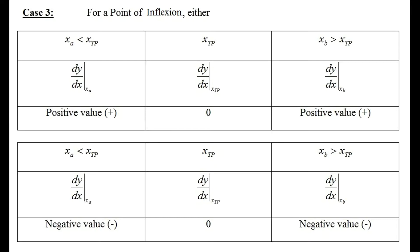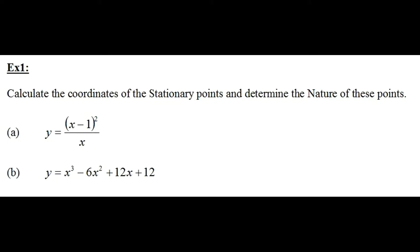We call this the first derivative test, though some teachers refer to it as using the nature tables. Now, example one: calculate the coordinates of the stationary points and determine the nature of these points. Remember, turning and stationary mean the same thing, and by nature we need to investigate what type of turning point we have.